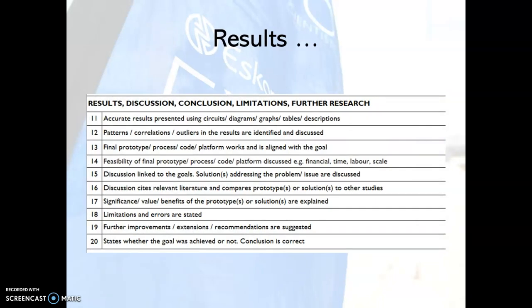Under the results section, for item number 11, it is unlikely that there will be circuits, but there could be diagrams, graphs, or tables, and there will almost certainly need to be descriptions depending on the nature of the project. Number 12 will apply to any type of project. Number 13 involves looking at the final code platform and making sure it works and is aligned to the design goal. Number 14 addresses whether the feasibility of the final code platform is discussed.